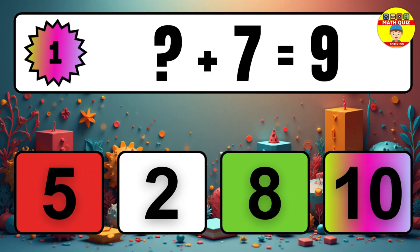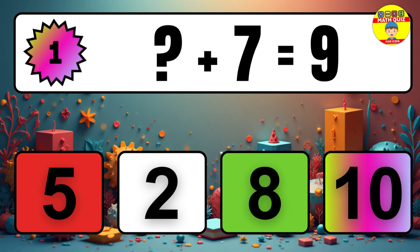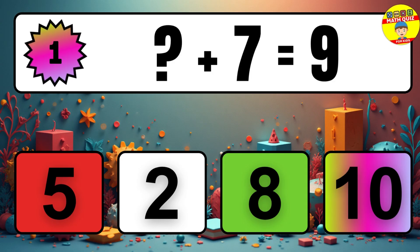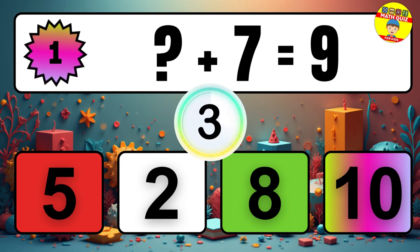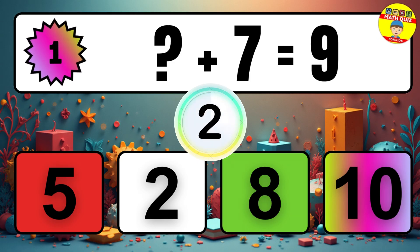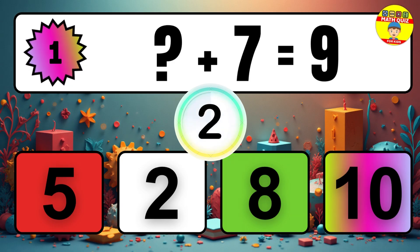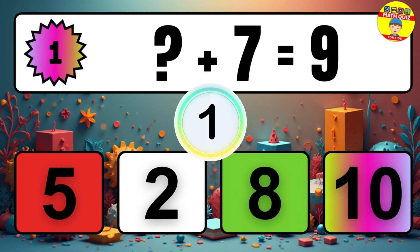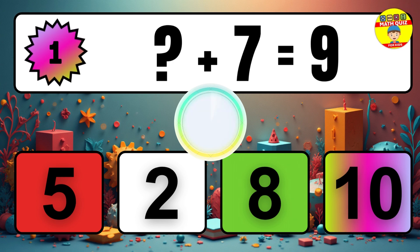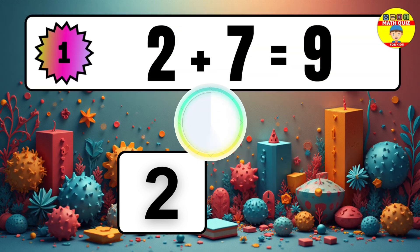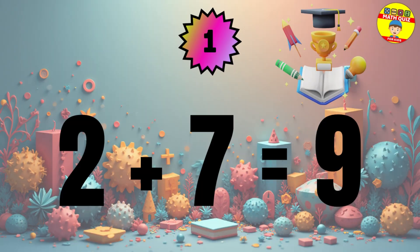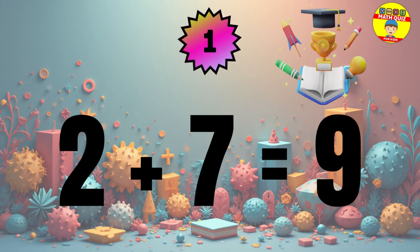Question 1. What number plus 7 equals 9? The right answer is 2.